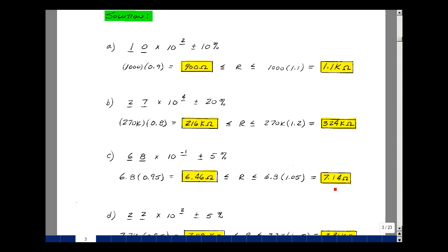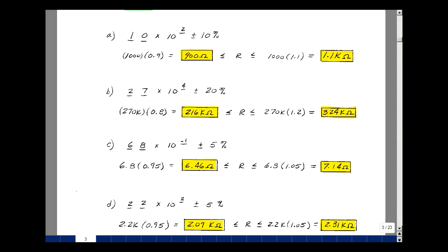And then lastly for the red, red, red, gold, red is 2, 2, and gold is 5%. So then what I've got for a nominal value is 2, 2 times 10 to the 2,